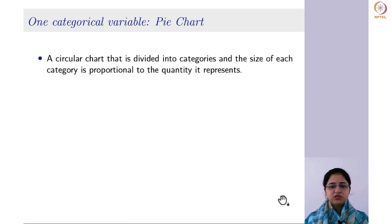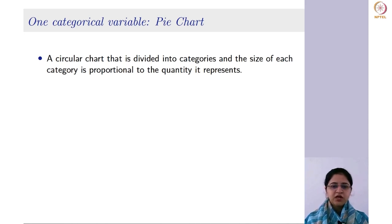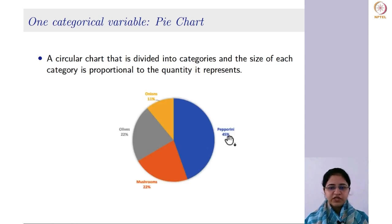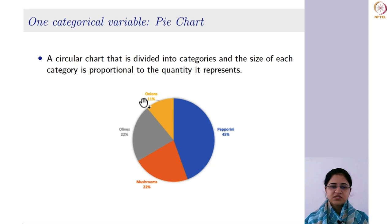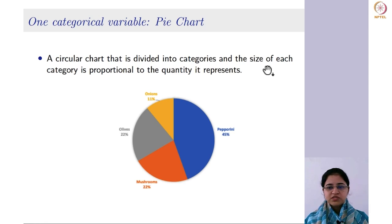The next chart commonly used is the pie chart — a circular chart divided into categories where the size of each category is proportional to the quantity it represents. Using the same pizza toppings example, pepperoni is 45%, mushrooms and olives are 22% each because the count was 2, and onions is 11%. The size of each segment varies — pepperoni is the largest segment because its percentage of 45% is the highest, so the size of each category is proportional to the quantity it represents.